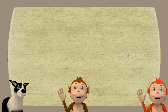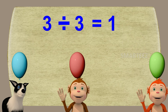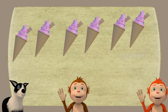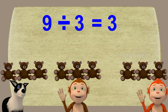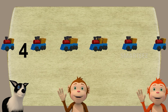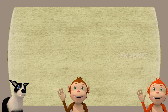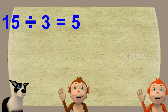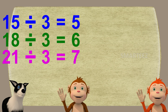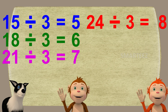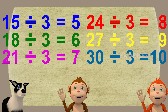Okay, let's check out what we did again. We divided all items between the 3 of you: 3 balloons divided into 1 each, 6 ice creams divided into 2 each, 9 teddy bears divided into 3 each, and 12 toy trains divided into 4 each. We can continue: 15÷3=5, 18÷3=6, 21÷3=7, 24÷3=8, 27÷3=9, 30÷3=10, and so on.